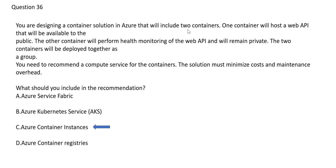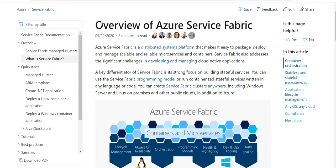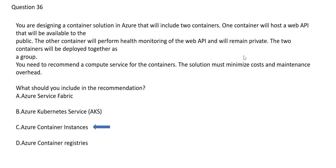The next question: you have two containers — one hosting a web API and another performing health monitoring of those API applications. Container instances are best suited for this purpose. Container Registry allows you to build, store, and manage container images in a private registry — it is not used for running two instances. Azure Service Fabric is a distributed systems platform for stateful services, but here we need a stateless service with no state storage requirement. From a cost perspective, container instances are more cost-effective and have less maintenance overhead.